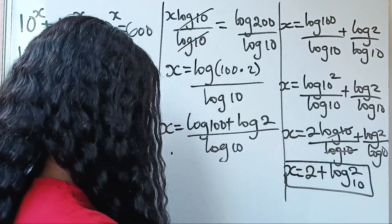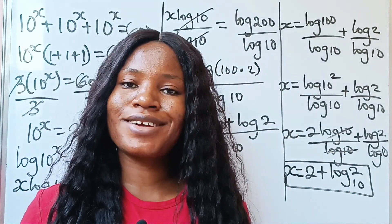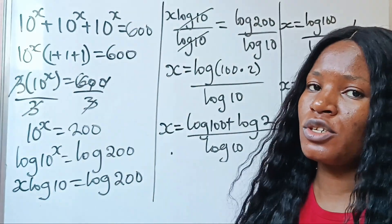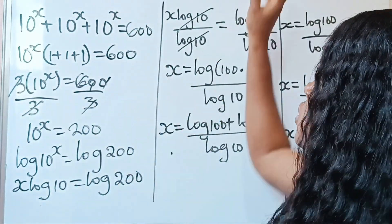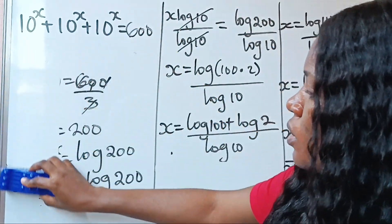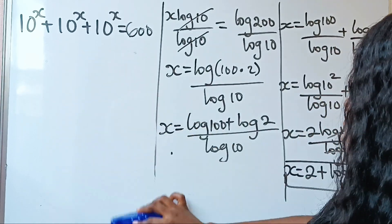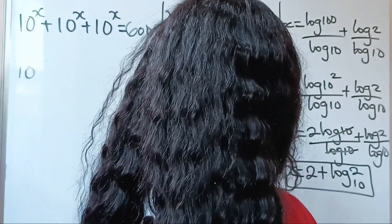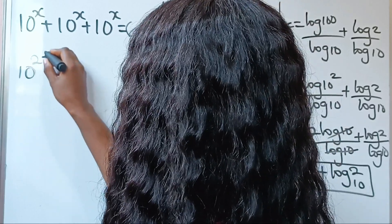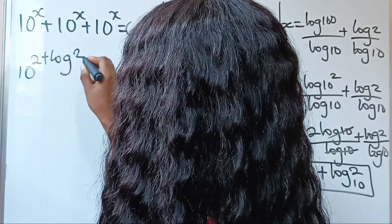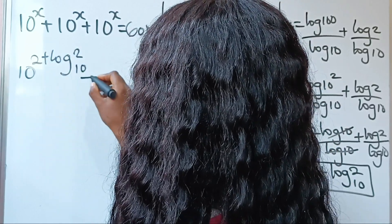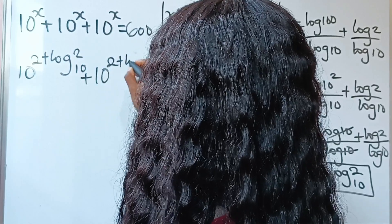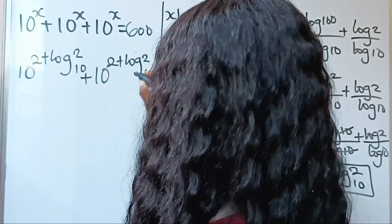This is the value of x. Let's get to the most interesting aspect of this video — let us substitute what we got into the equation. So we have 10 to the power of x, where x is 2 plus log base 10 of 2, plus 10 to the power of 2 plus log base 10 of 2.